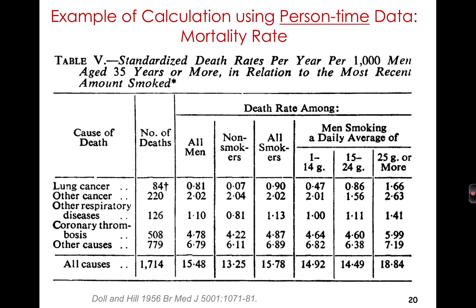As an example of a calculation using a person-time denominator, let's take the mortality rate from a classic study by Doll and Hill — the cohort of British doctors. Smoking status was ascertained at baseline and they were followed for mortality over time. The table shows death rates per 1,000 men per year. Among nonsmokers, there were 0.07 lung cancer deaths per 1,000 men per year. Among smokers, 0.9 lung cancer deaths per 1,000 men per year. For coronary thrombosis: nonsmokers 4.22, smokers 4.87. We can take those incidence rates and calculate the rate ratio.